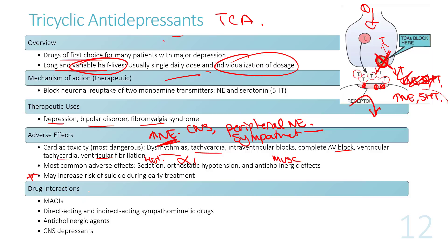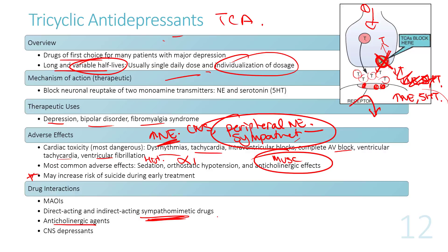Drug interactions with TCAs: avoid combining with other anticholinergic drugs, other sympathomimetic agents (as this drug already stimulates cardiac effects), MAOIs (another class of antidepressants), and other CNS depressants.